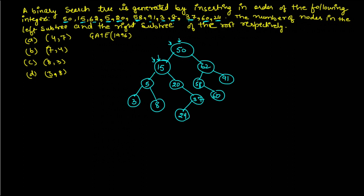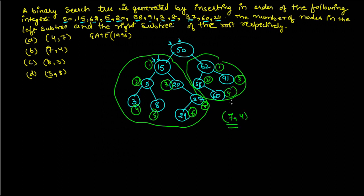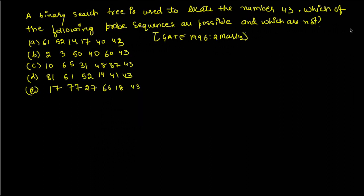24 is less than 50, greater than 15, greater than 20, and less than 37, so it goes to the left of 37. Now counting the nodes: the left subtree has seven nodes and the right subtree has four nodes. So the answer is 7 and 4, therefore option B is correct.